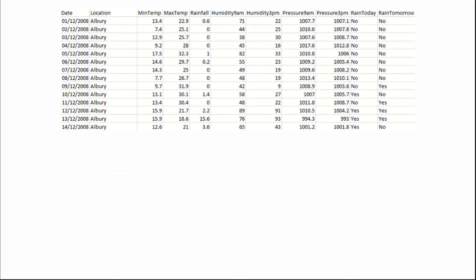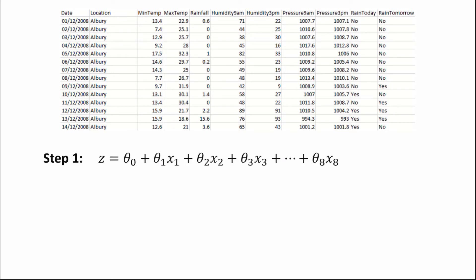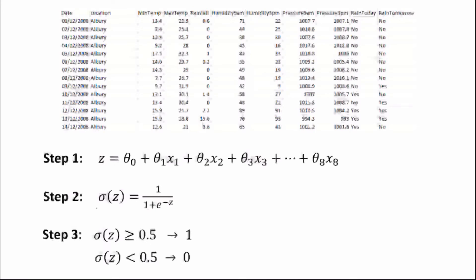To give some maths on how we can map these inputs onto our output: first we use a form of linear regression to produce a value from all of our input data. We then take this value and put it into what's called the logistic function. This function takes any value and puts it on a scale between zero and one, essentially transforming any value into a sort of probability. We then implement a boundary condition — checking if the value produced by the logistic function is greater than or equal to 0.5. If so, we output yes, it will rain tomorrow; if not, we output no.